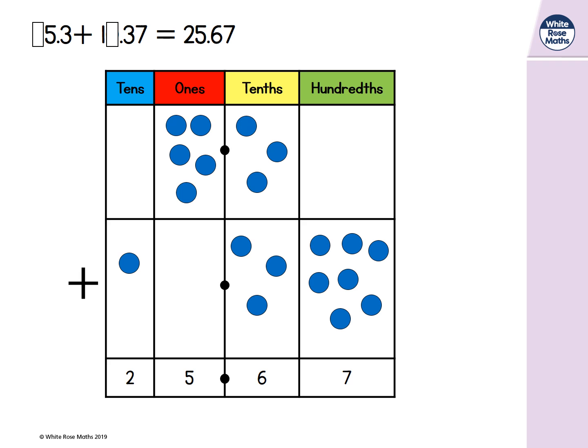Now let's look in our ones column. There are already 5 ones in our ones column. And there are 5 ones in our answer. So 0 ones are needed.